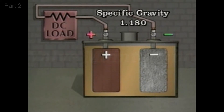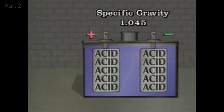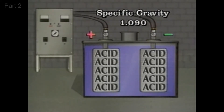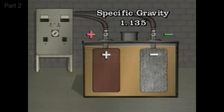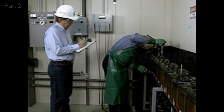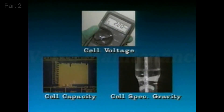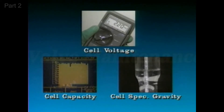As the cell discharges, the specific gravity of the electrolyte decreases because sulfuric acid leaves the electrolyte and combines with the lead in the plates of the cell. When the cell is recharged, the specific gravity increases because sulfuric acid is driven off the plates and back into the electrolyte. So the specific gravity of a cell provides another indication of a battery state of charge and its ability to provide the required backup power when it's needed. In-service cell voltage, capacity, and specific gravity are all indicators of a battery state of charge and its ability to provide backup power, and the value of each of these indicators is related to the value of the other two.